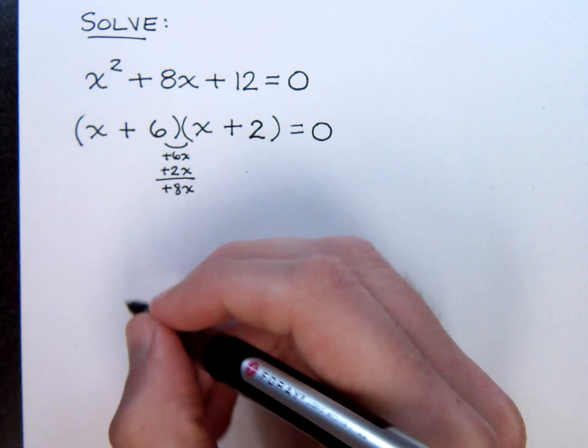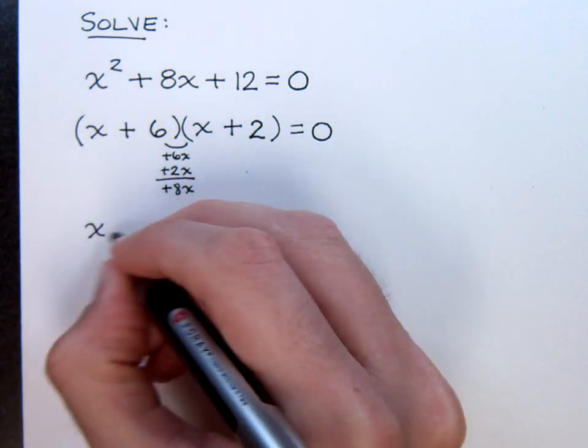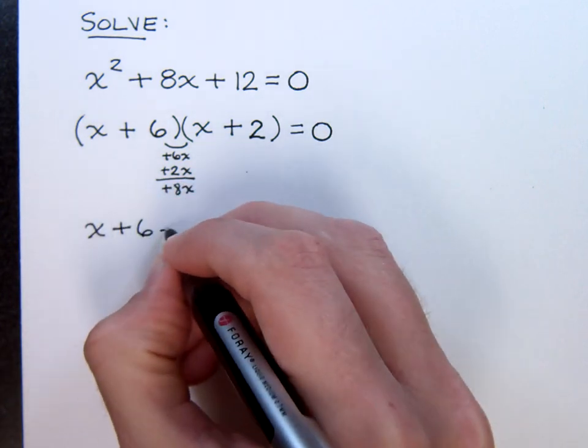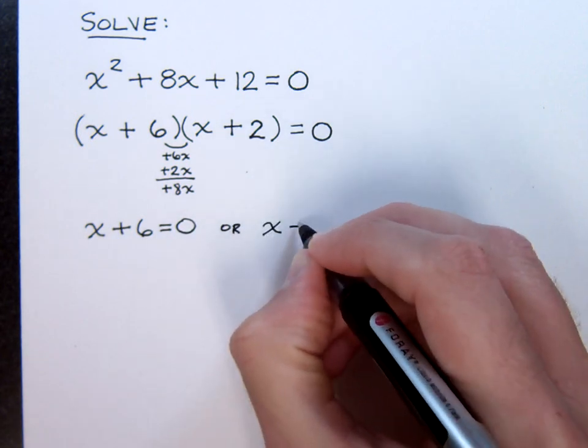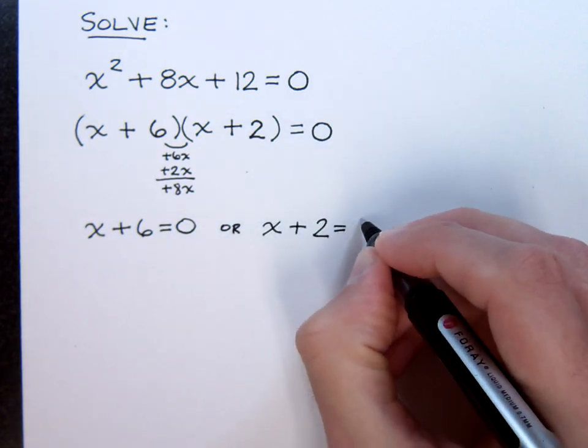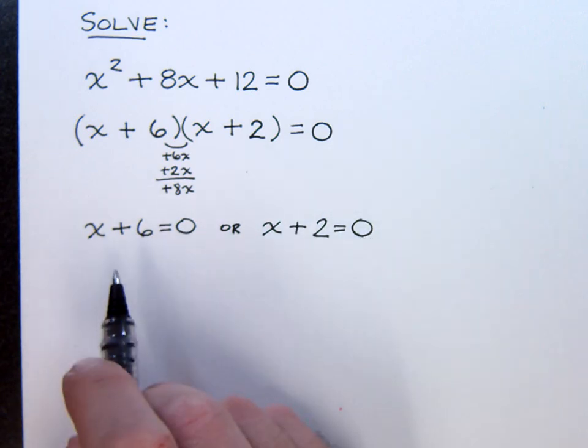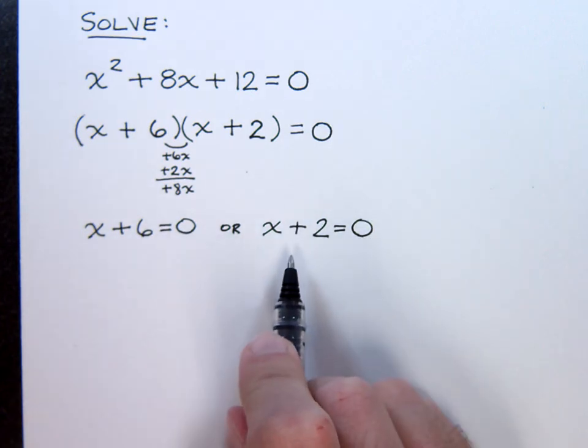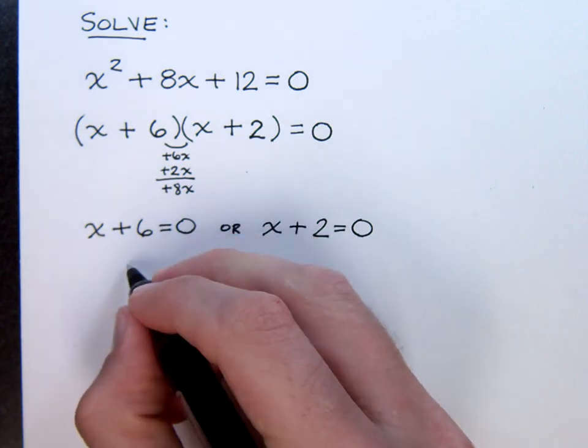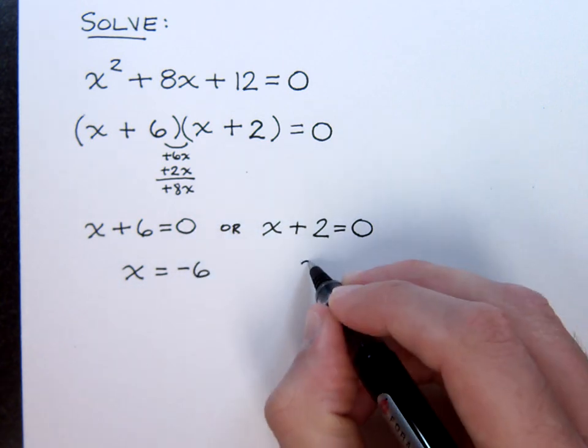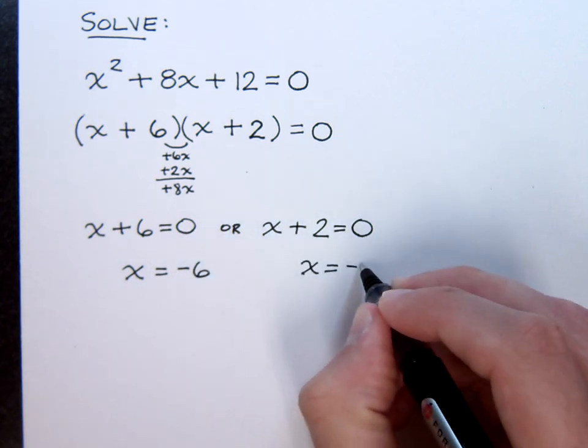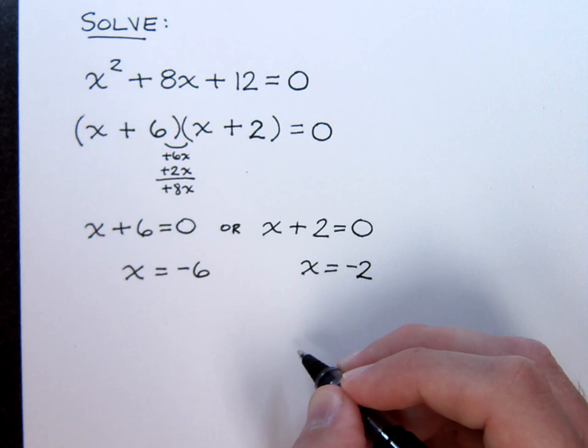Now using the zero factor theorem, we know that x plus 6 equals 0 or x plus 2 equals 0. Taking these nice small linear equations and solving them is really no big deal. So just move the 6 to the other side so x equals negative 6 or x is equal to negative 2.